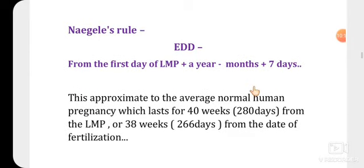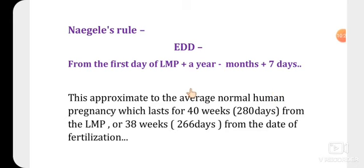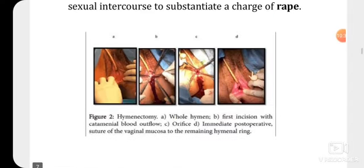There is a legal formula for finding the expected date of delivery: from the first day of the last menstrual period, add one year, subtract three months, and add seven days — that gives the expected date of delivery. This is Naegele's formula, used to calculate the expected date of delivery.